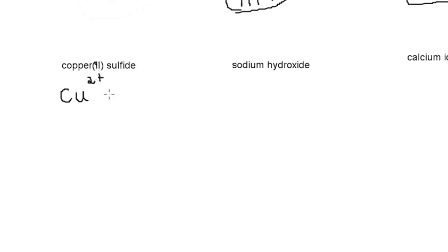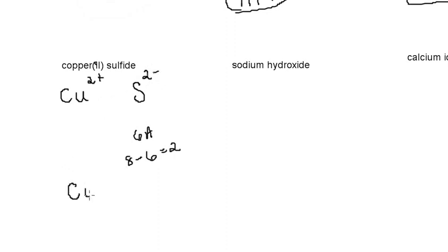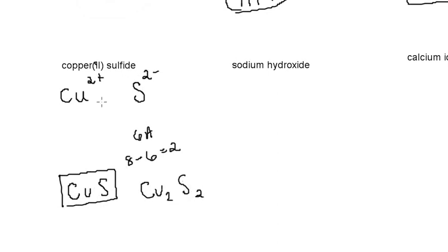So copper's symbol is Cu with a charge of 2. There's no sulfide on the periodic table, but there is sulfur — symbol S — found in group 6A. Using the octet rule: 8 minus 6 equals 2, so sulfur has a 2 minus charge. Applying the criss-cross rule gives Cu₂S₂, which simplifies to CuS. That's the formula for copper 2 sulfide.